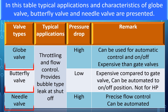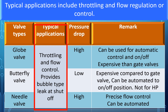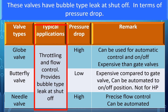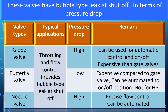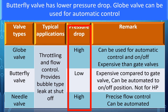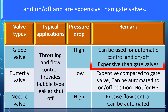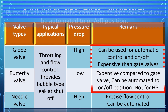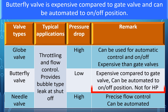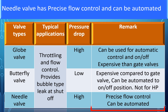This table presents typical applications and characteristics of globe valves, butterfly valves, and needle valves. They can be used for all types of chemicals, both liquid and gases. Typical applications include throttling and flow regulation or control. Globe and needle valves have higher pressure drop due to their design, while butterfly valves have lower pressure drop. Globe valves can be used for automatic and on-off control, and are more expensive than gate valves. Butterfly valves can be automated to on-off position, and needle valves offer precise flow control and can also be automated.